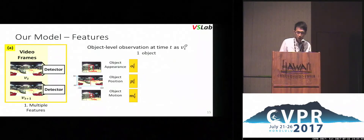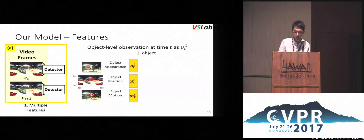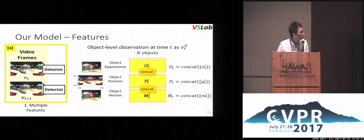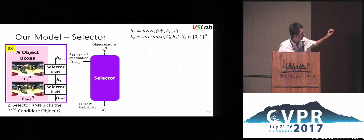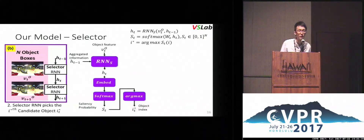For the feature part, we use high-level CNN representations as object appearances, the object center as position, and histogram of flow as motion features. We aggregate these feature types from N objects into feature blocks and combine them into one matrix, which we denote as V. We feed this object feature V and aggregated information into our selector, which outputs an N-object saliency probability ST via a softmax function over the embedding information. We obtain the object index I* by an argmax function.